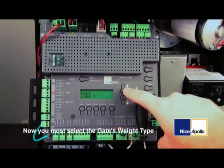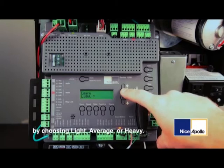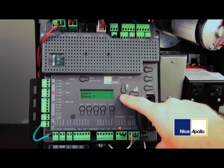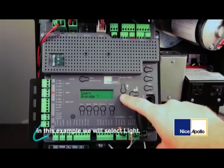Now you must select the gate's weight type by choosing light, average, or heavy. In this example, we will select light.